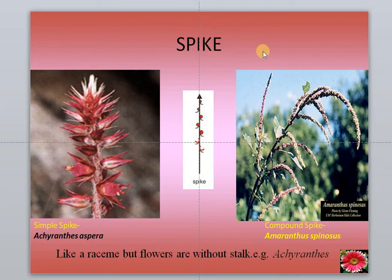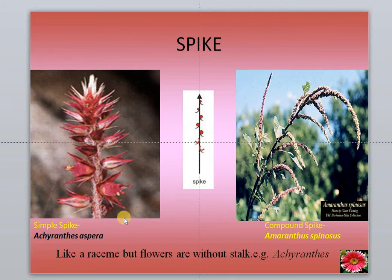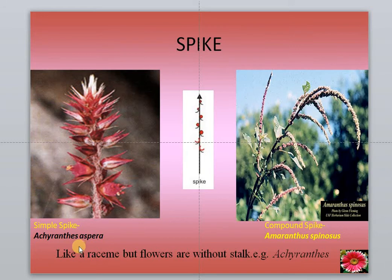This is called a spike. Sessile flowers are developed in an acropetal succession — older flowers are seen towards the base and younger flowers towards the tip. The tip is growing. This is a compound spike, where multiple spikes are present. This is a single spike, and an example plant we can see is asparagus.